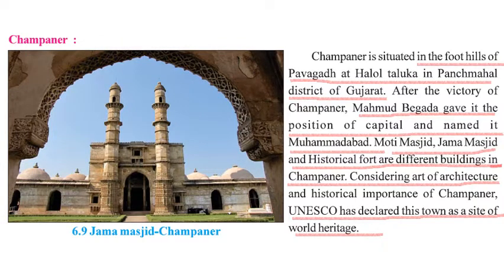Champaner is a Gujarati city situated in the foothills of Pavagadh in the Halol taluka of Panchmahal district of Gujarat. When Mahmud Begda won Champaner, he made it his capital city and renamed it Mohmadabad. Many monuments like Moti Masjid, Jama Masjid, and a historical fort are among the buildings of Champaner. Due to the art, architecture, and historical importance of Champaner, UNESCO declared the whole town as a World Heritage Site.